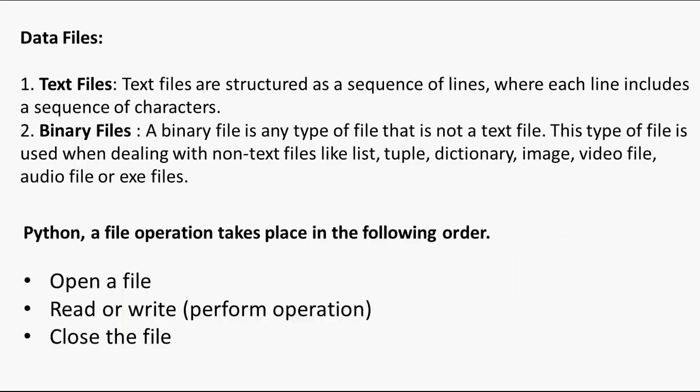In Python there are two types of files: one is a text file and the second one is a binary file. Text files deal with files that can store only textual data — the file is structured as a sequence of lines, and each line contains a sequence of characters. Whenever we need to store textual data, we must deal with only text files.